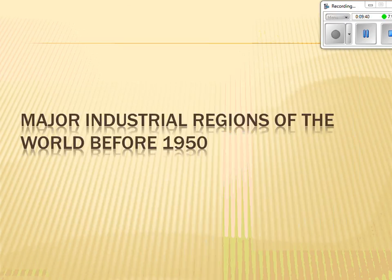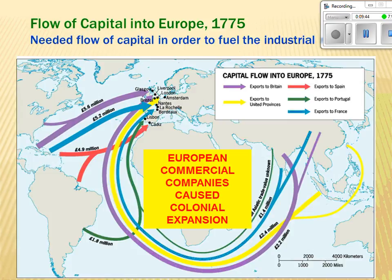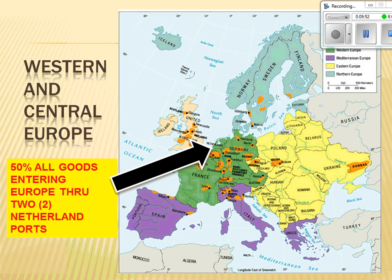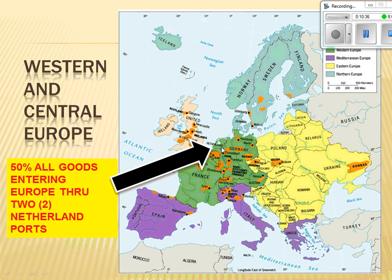The next major chunk of information is about the industrial regions of the world. The flow of capital from colonies caused more and more expansion, which brought more capital flow. Many places from the Industrial Revolution are still major industrial regions today — certainly Western and Central Europe, where coal and rivers drove industrial city formation. Those cities are still there, though not as strong as they used to be. Ports and coastal areas are also important — Rotterdam in the Netherlands is considered one of the busiest ports in the world and was important in the Industrial Revolution and still is today.